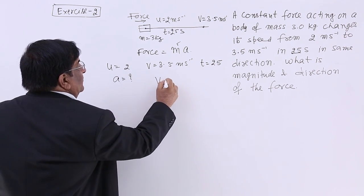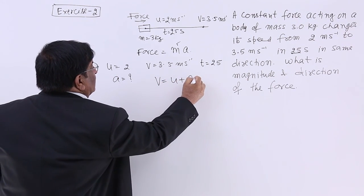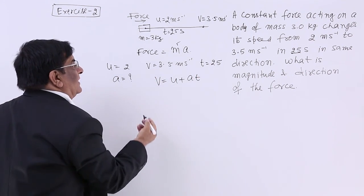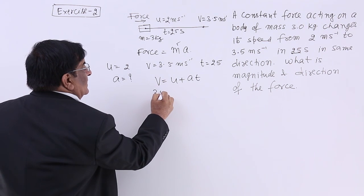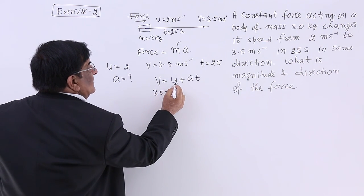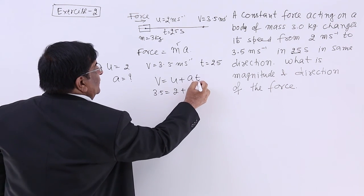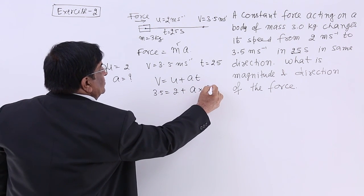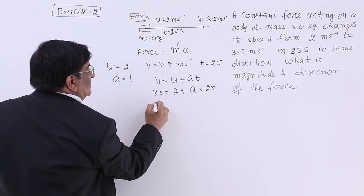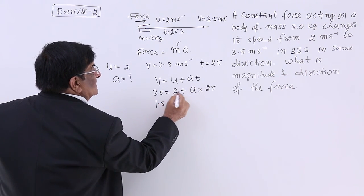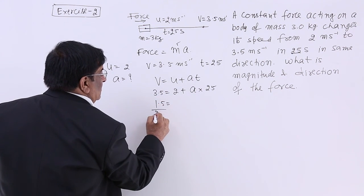And you know the formula: V is equal to U plus A T. For these four quantities, we put the values here. 3.5 is equal to 2 plus A, which we have to find out. And T is equal to 25. So 1.5 is equal to 25A.